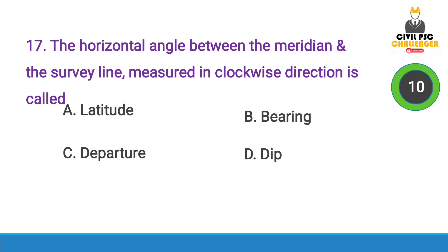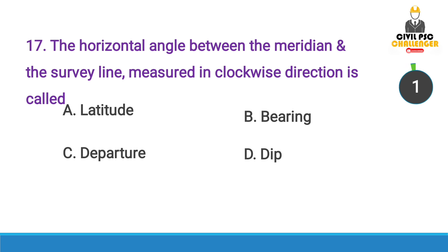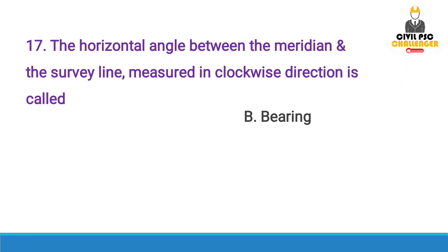Next question: The horizontal angle between the meridian and the survey line measured in the clockwise direction is called — Answer option B, Bearing.